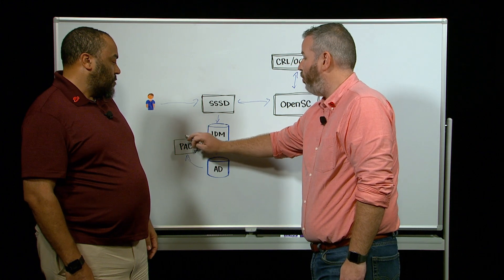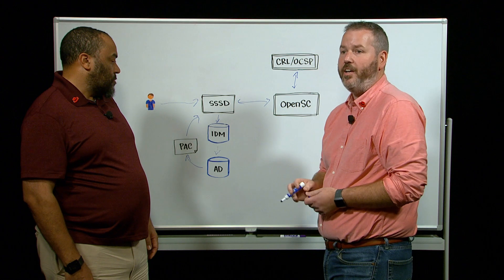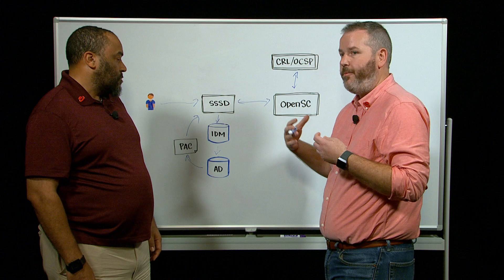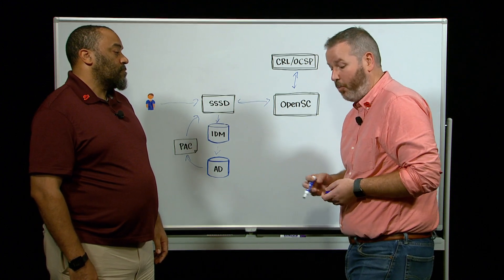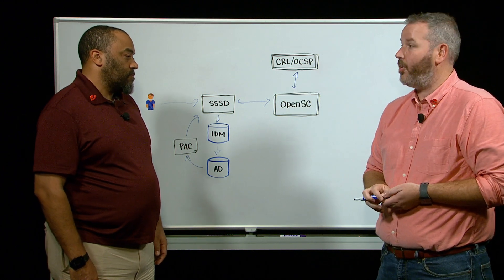IDM will then send what's called a PAC back to the system, which has all of the users' pertinent information, group membership, UID, GID, any other attributes that is part of that user, to be leveraged as part of that system. So that's the process for doing smart card authentication. That's as tough as it gets.